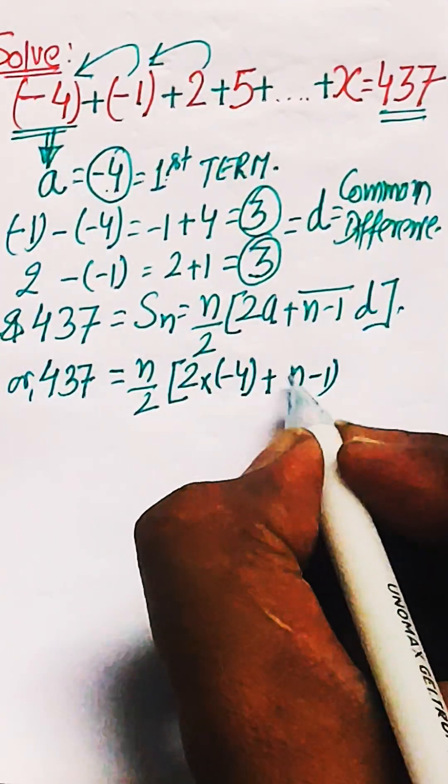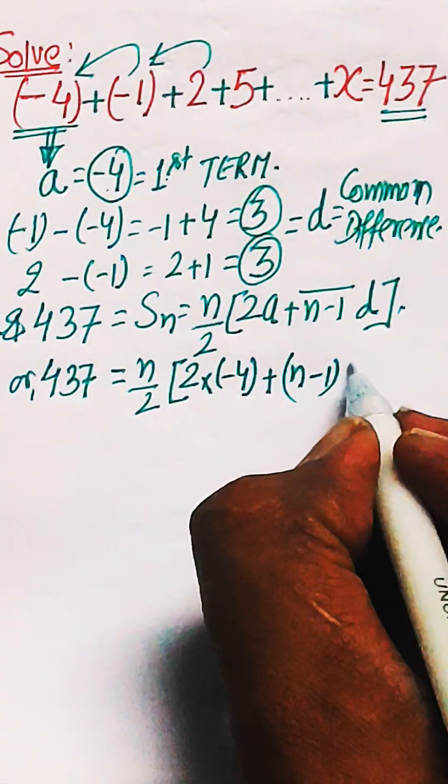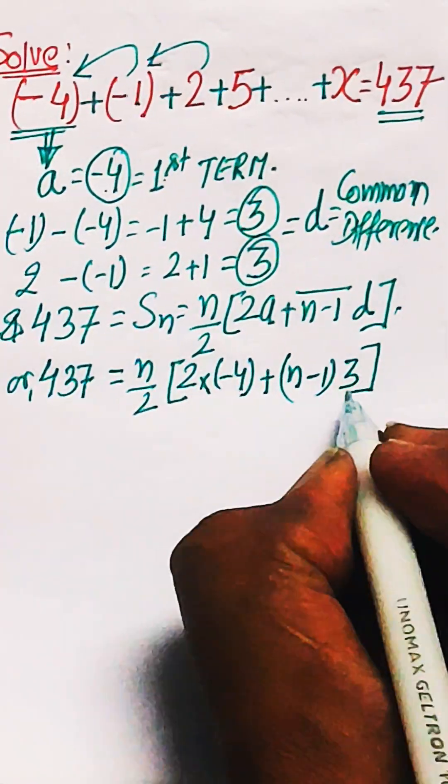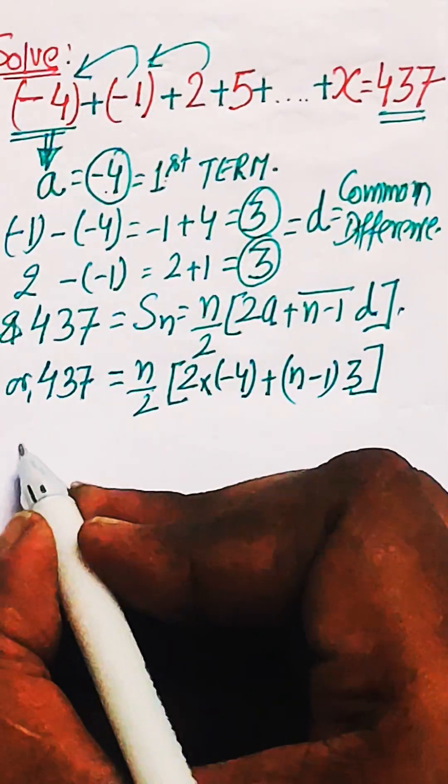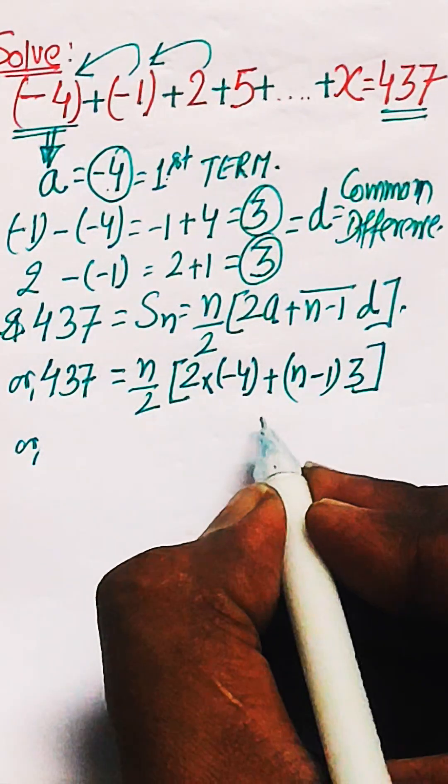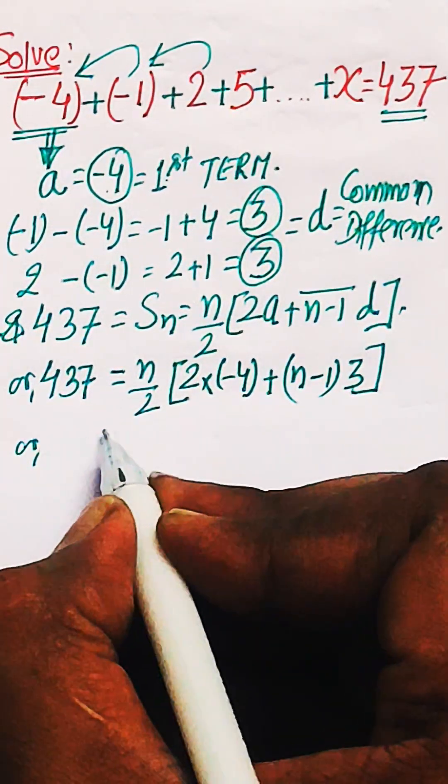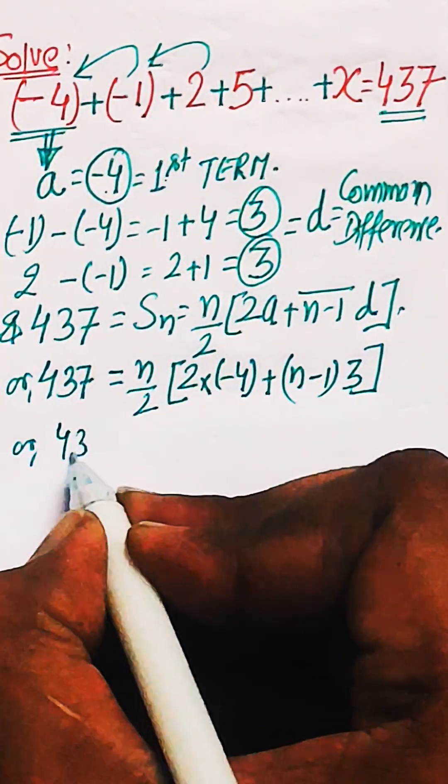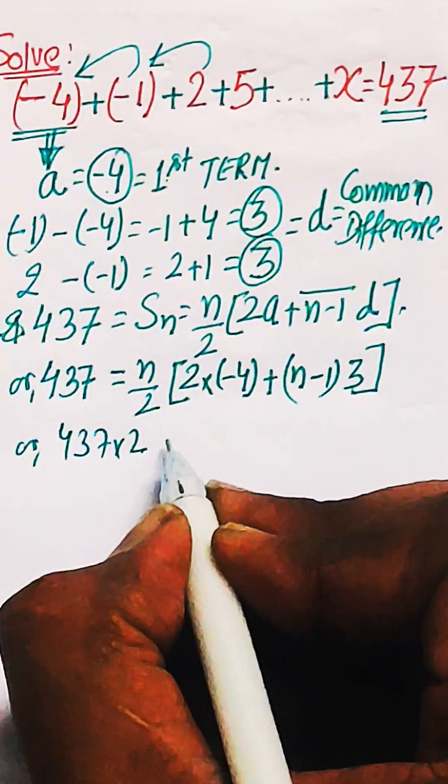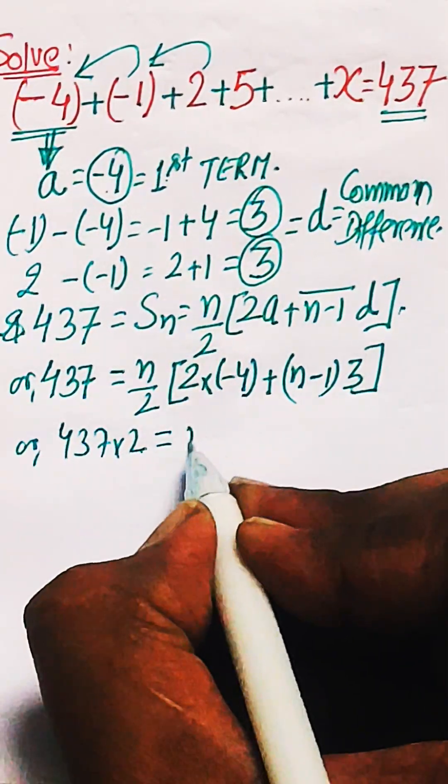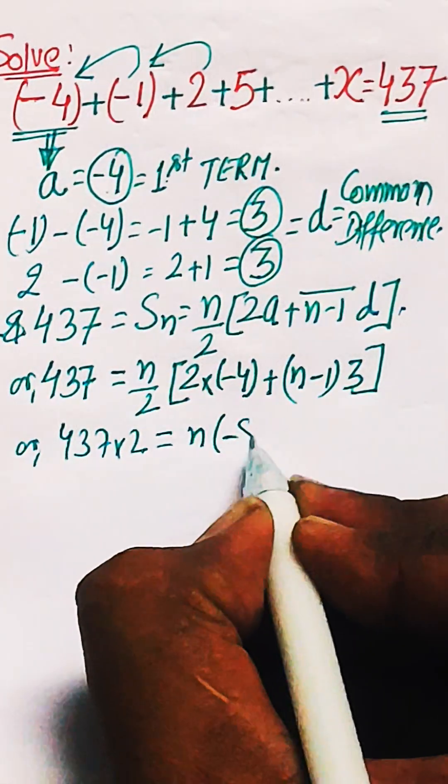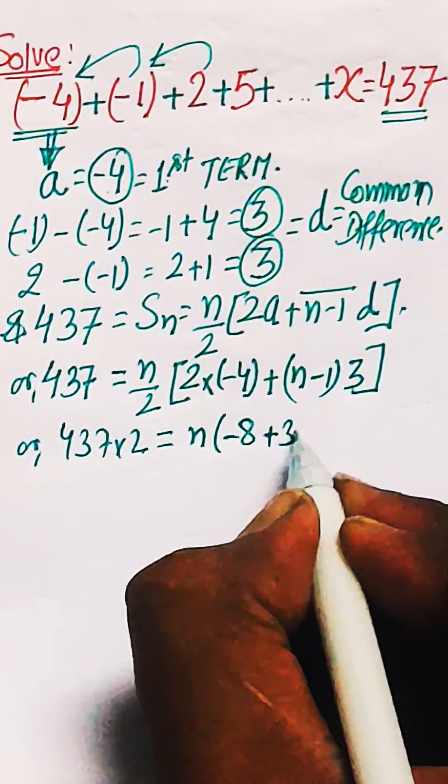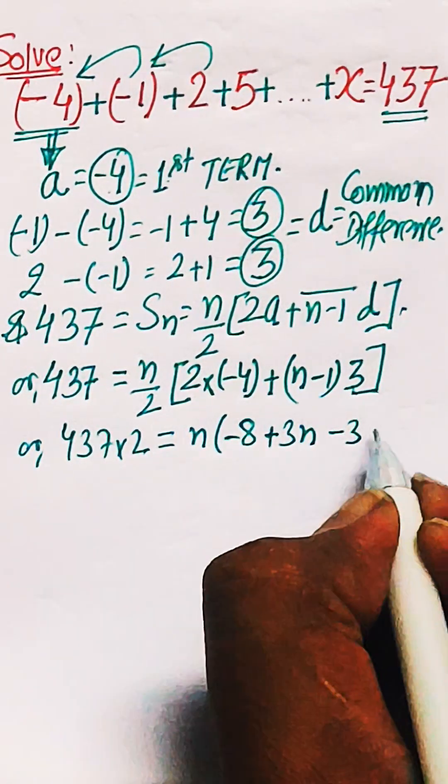Now put up all these values and calculate N. So when you put up all these values and solve it forward, you can see this will be forming a quadratic equation. And what is that quadratic equation? Let us see. Just 2 multiplied by 437. So 437 into 2 is equal to N times in the bracket minus 8 plus 3N minus 3.